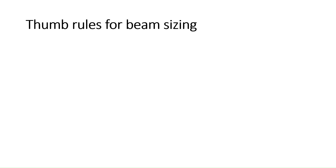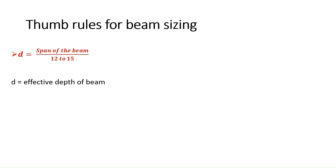Coming to the beam sizing, you can consider the effective depth of the beam as span of the beam divided by 12 to 15. For example, if your span of the beam is 15 feet, then you can consider an effective depth of around 1 foot, which is approximately 300 mm. Once you know the effective depth of the beam, you can easily calculate the overall depth of the beam.